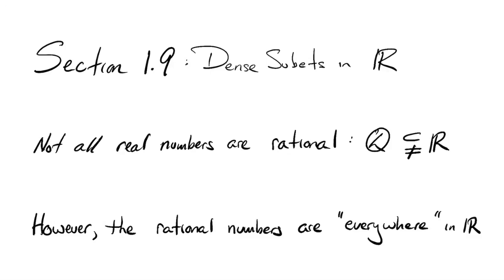Earlier, when we were discussing the completeness axiom, we noted that the rational numbers are a subset of the real numbers — they satisfy all the field axioms and all the order axioms — but they differ from the real numbers in that they don't satisfy the completeness axiom. Not every set of rational numbers bounded above has a least upper bound that's rational. The argument for that required rational numbers arbitrarily close to, in our example, the square root of two. So this density business is a way to make precise what I mean by 'there are rational numbers arbitrarily close to every real number.'